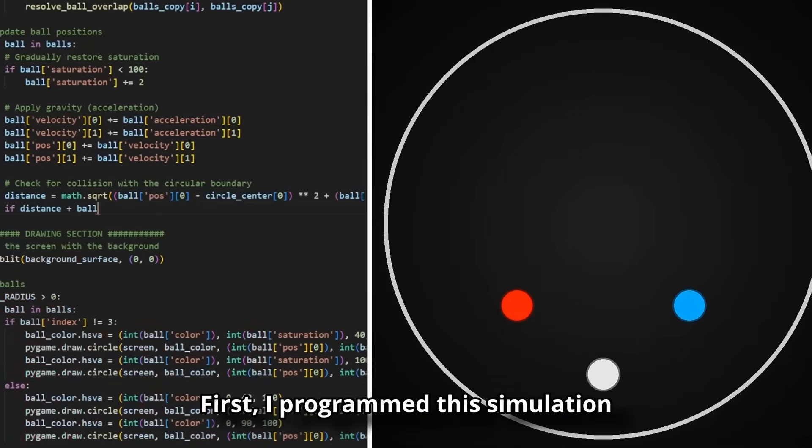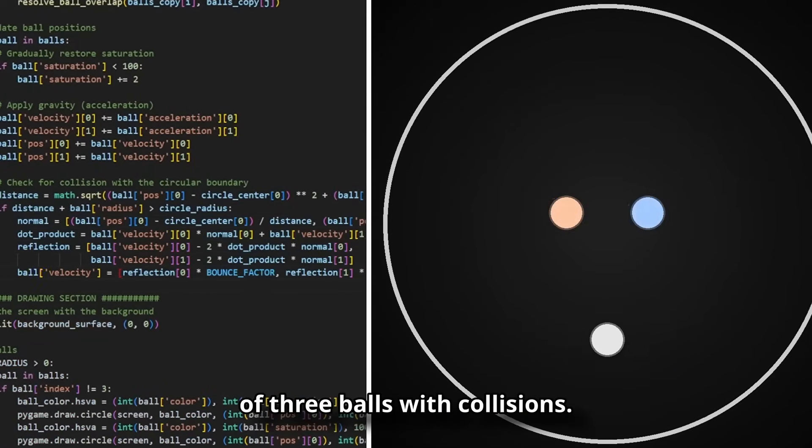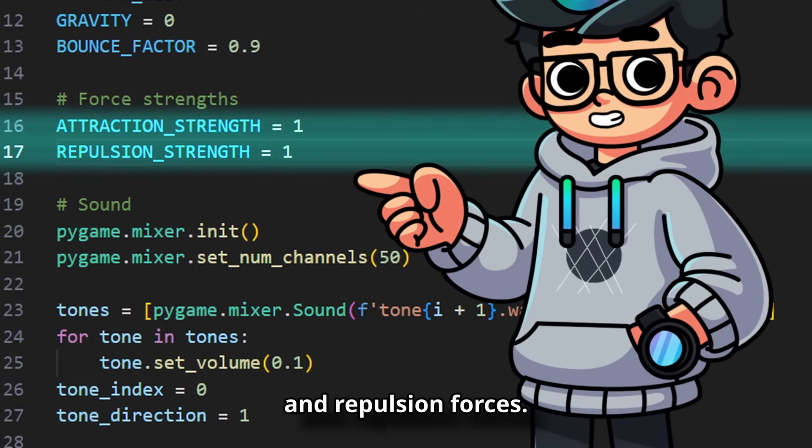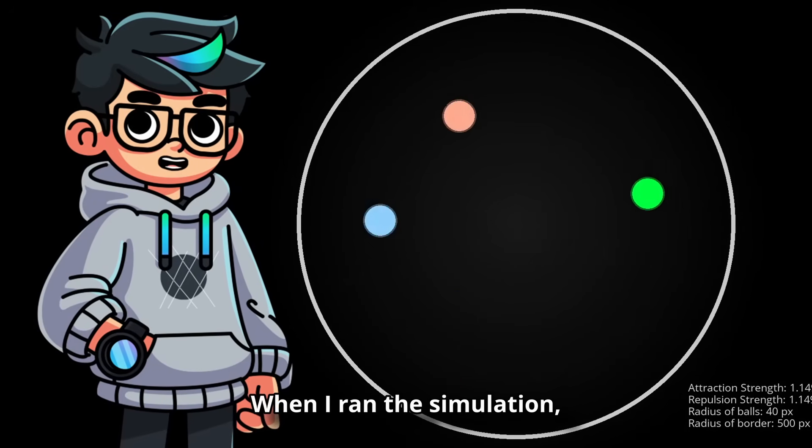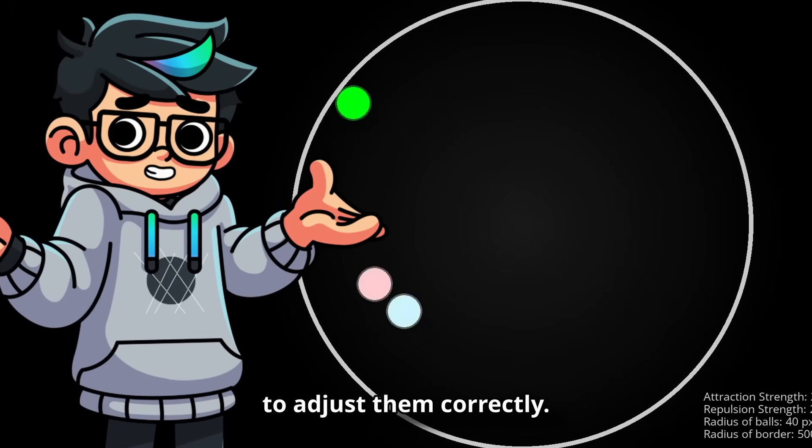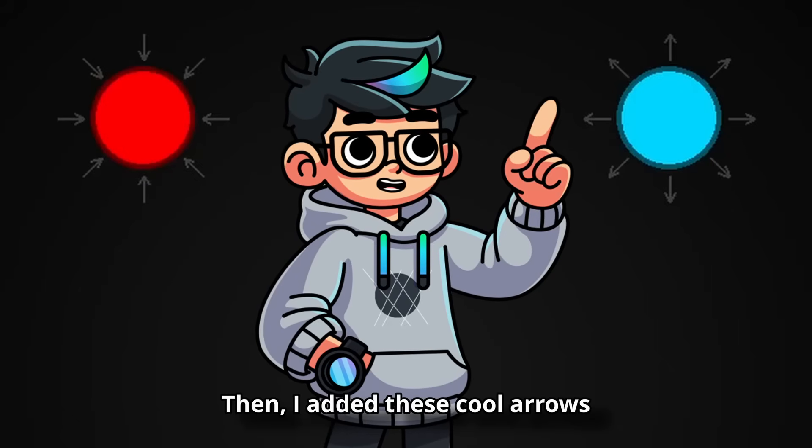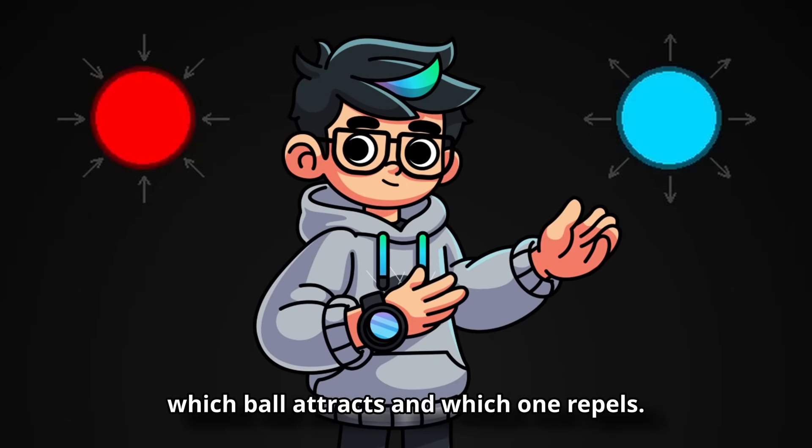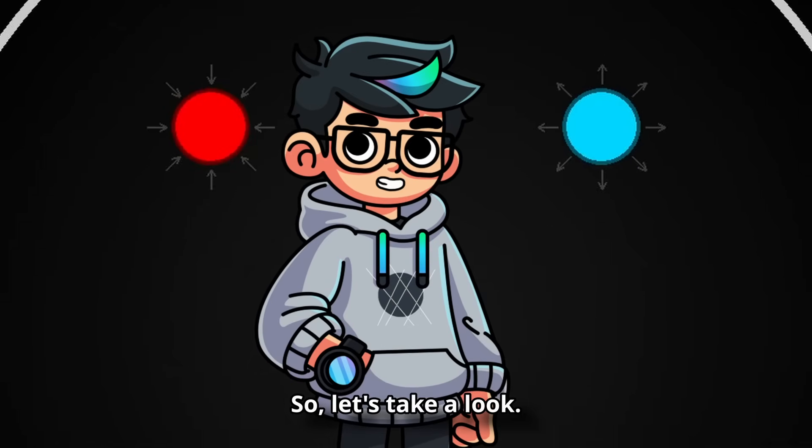First, I programmed this simulation of three balls with collisions. The next step was introducing attraction and repulsion forces. When I ran the simulation, it went crazy. The forces were too strong and it took me a minute to adjust them correctly. Then, I added these cool arrows so we can actually see which ball attracts and which one repels. So, let's take a look.